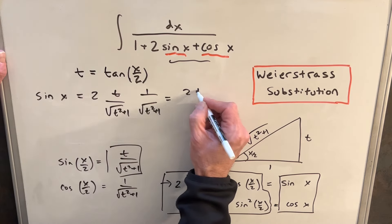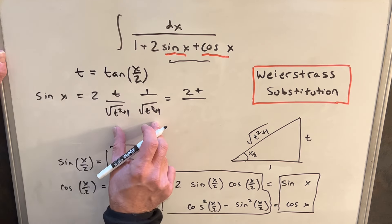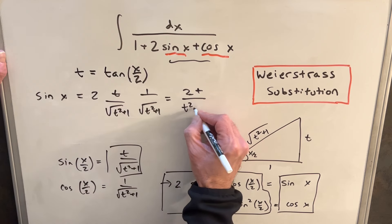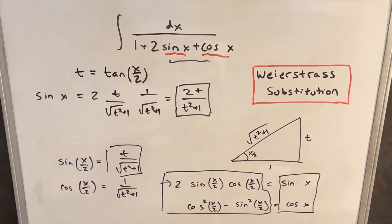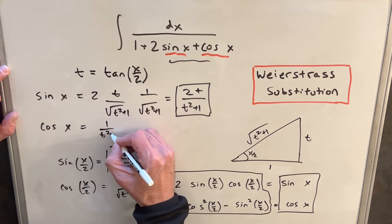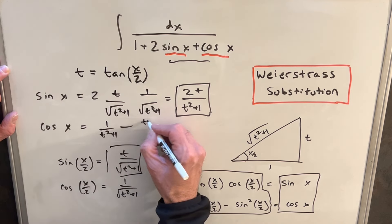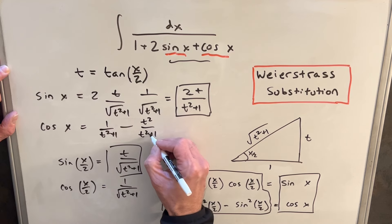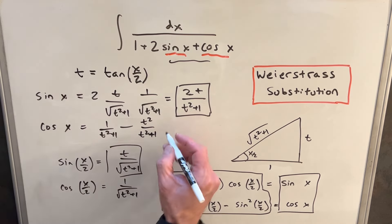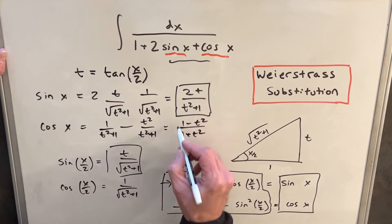So multiplying that out, we're going to have 2t in the numerator, and then these two terms squared, it's the same thing. So when we square the square root, we just get back t squared plus 1. Then we'll just do the same thing for cosine. Using this formula here, we need cosine squared of x over 2. So that's just going to be this thing squared, which is 1 over t squared plus 1, minus sine squared, which is going to be t squared over t squared plus 1. But then we have the same denominator, so we can just write this as 1 minus t squared over 1 plus t squared.